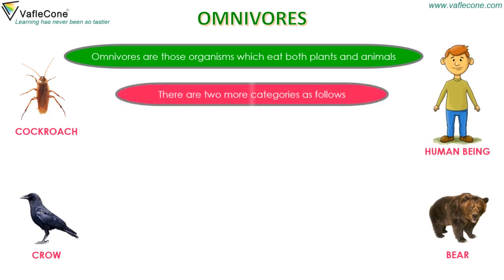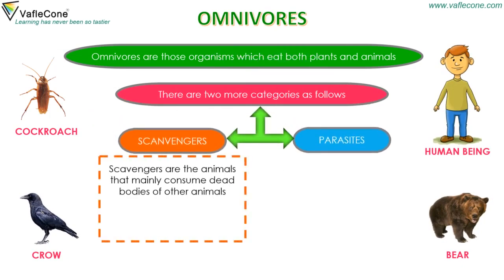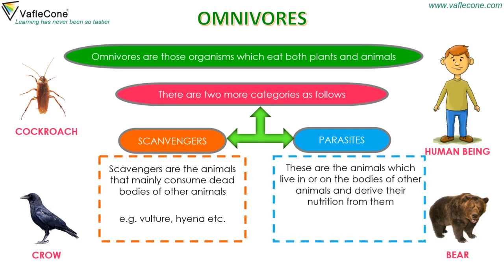There are two more categories. Scavengers are the animals that mainly consume dead bodies of other animals. For example, vulture, hyena, etc. Parasites are the animals which live in or on the bodies of other animals and derive their nutrition from them. For example, lice, leeches, bed bugs, mosquitoes, etc.